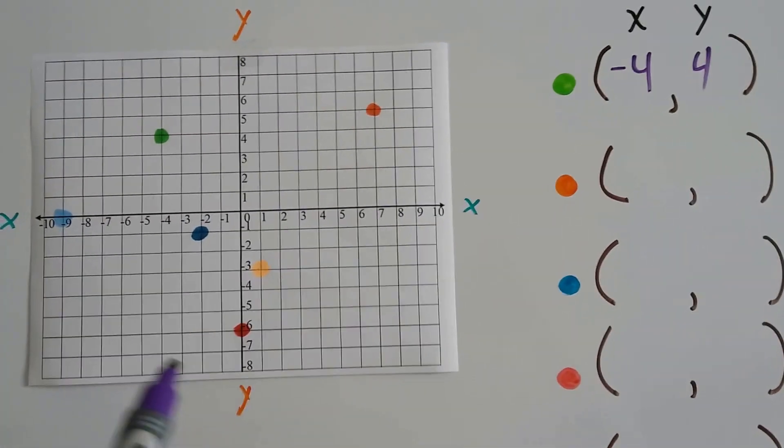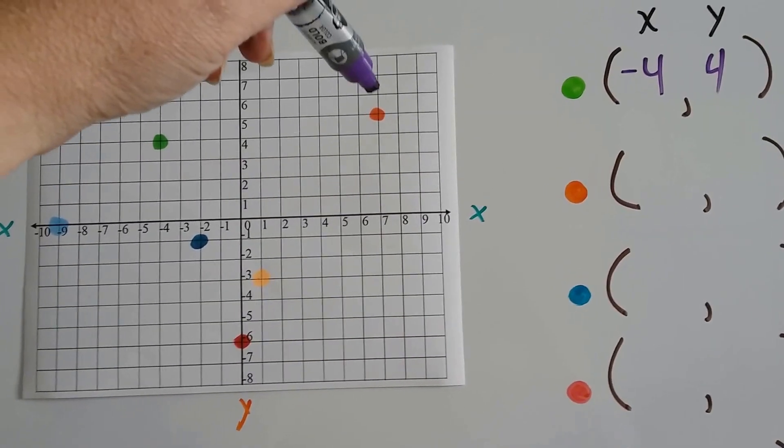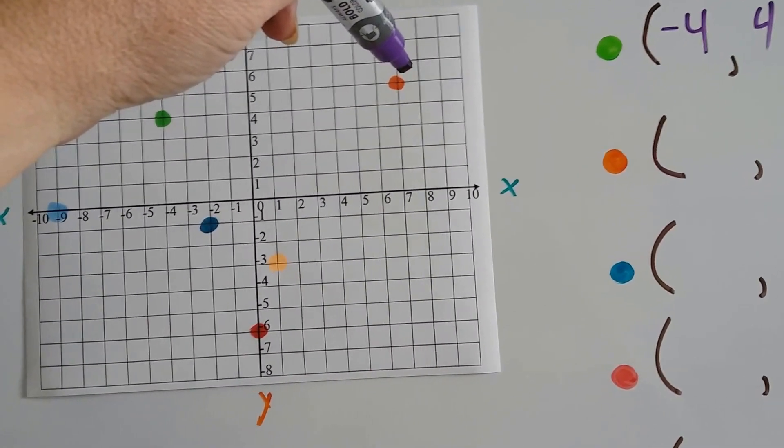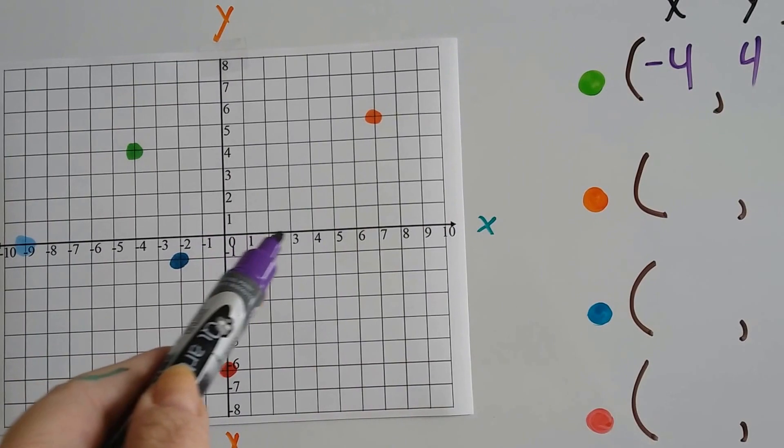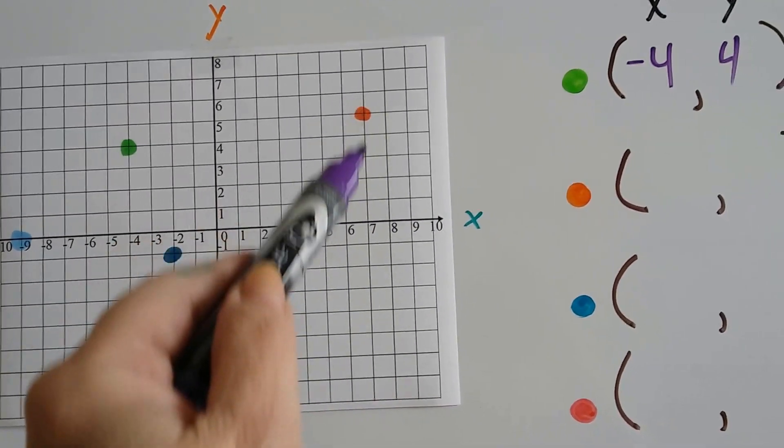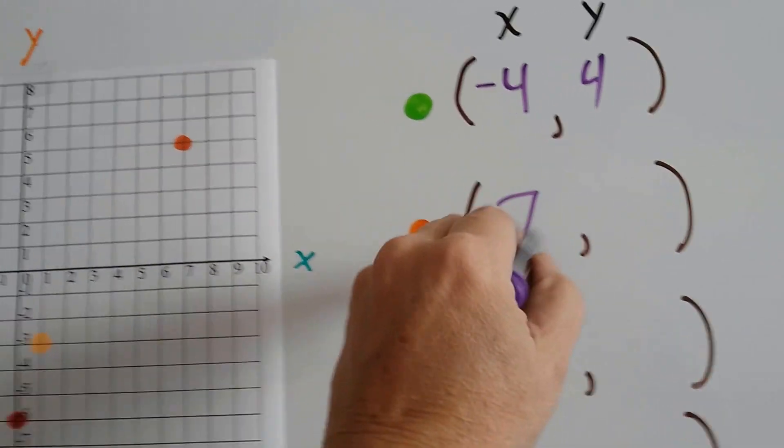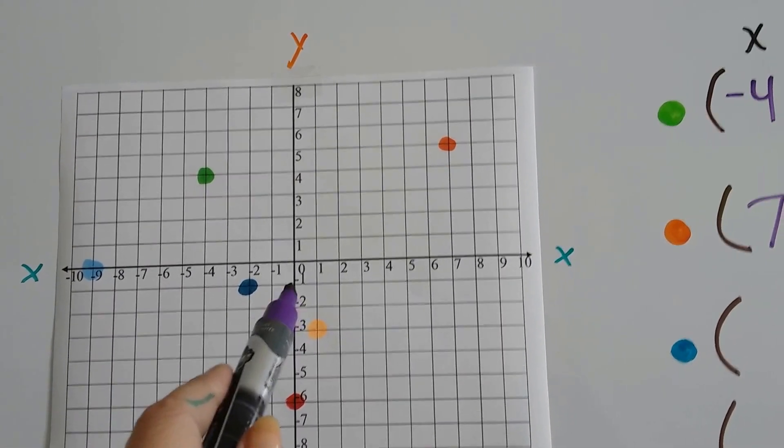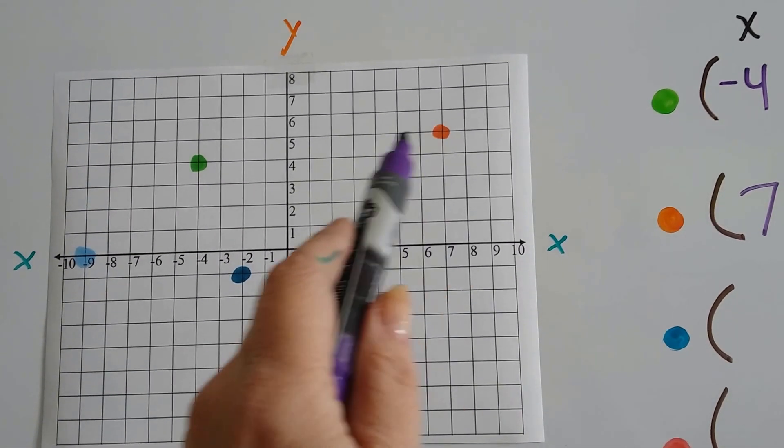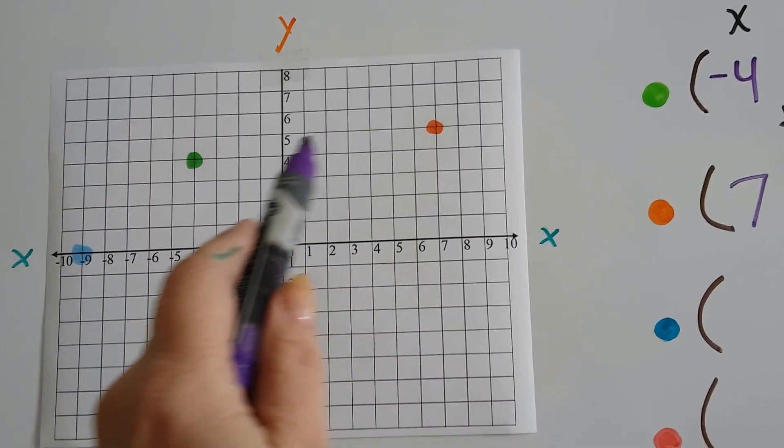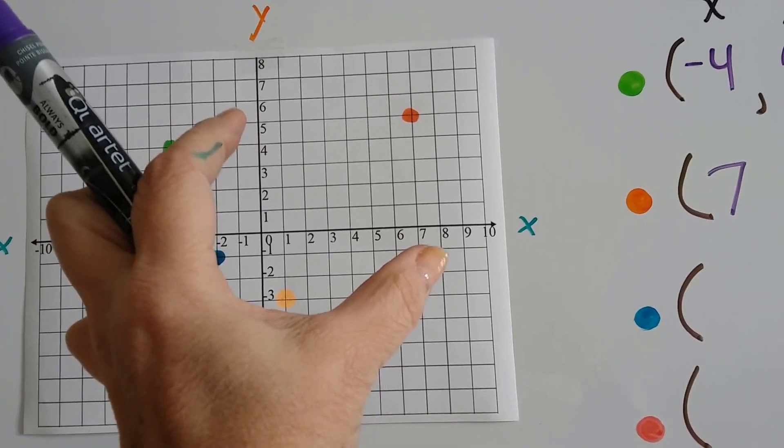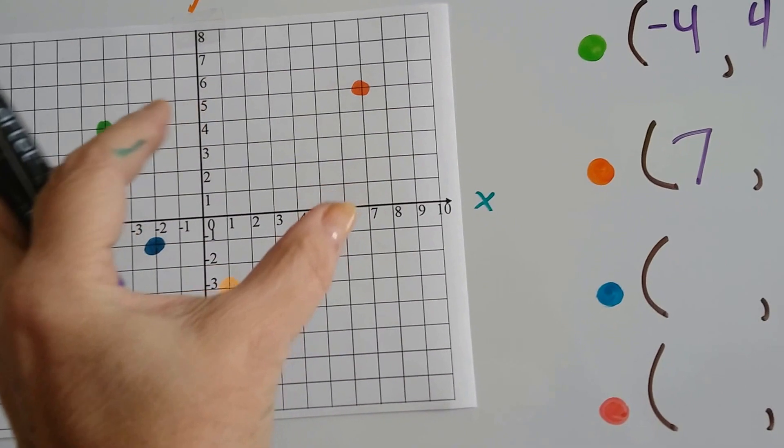Alright, what about this orange one? The orange one is right here. What are the coordinates for this orange one? Well, on the x-axis, it's at a 7. See that? It lines up with the 7. What does it line up with for the y? It lines up with the 5, doesn't it? It's where the 7 and the 5 are meeting.